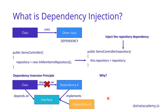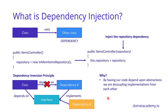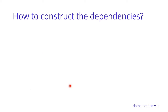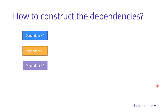Why do we want to do this? By having our code depend on abstractions, we're decoupling implementations from each other, giving much more freedom to swap dependencies without touching our class. This makes code cleaner, easier to modify, easier to reuse, and much easier to test. Now, if we're receiving dependencies in the constructor, how do we construct them? That's where the service container comes in — in .NET 5, it's an IServiceProvider.